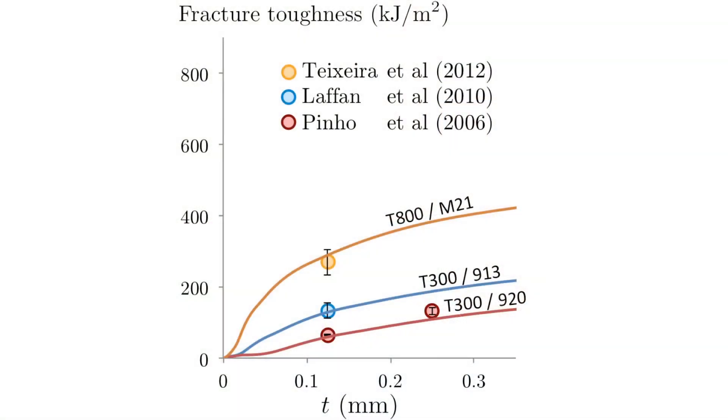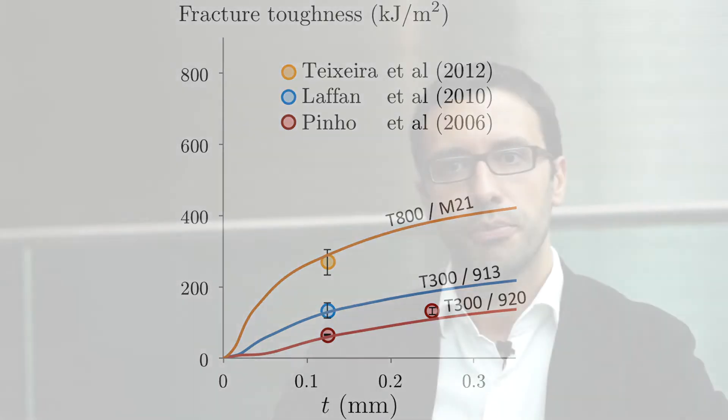The model we developed following this approach is the first to predict the size-dependent trans-laminar fracture surface from constituent properties. In fact, this model can be used not only for structural design, but also for material development, since the predictions are obtained from fibre, matrix and interface properties.